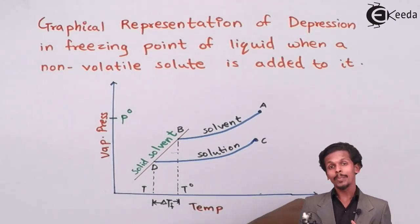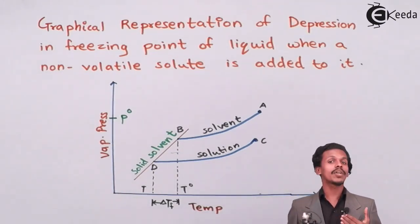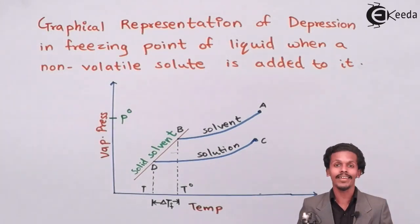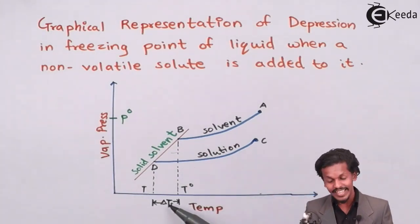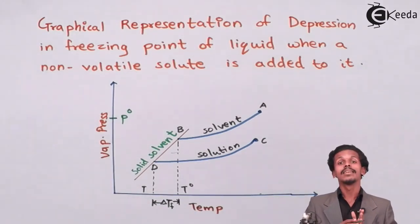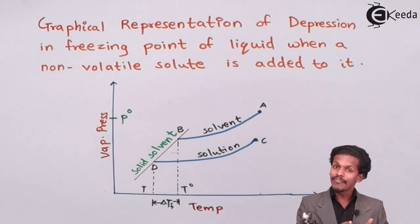So by this, as you can see, if the concentration increases, the vapor pressure decreases, and according to that there will be change in TF or there will be change in the difference between the freezing point of pure solvent and freezing point of solution.